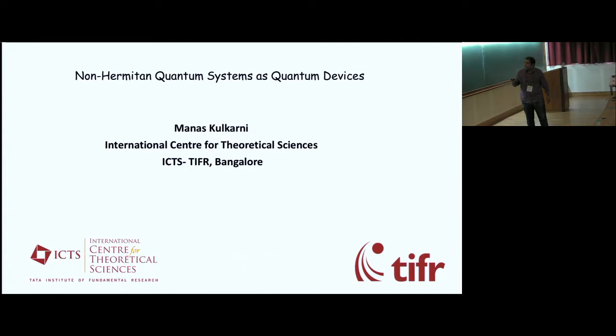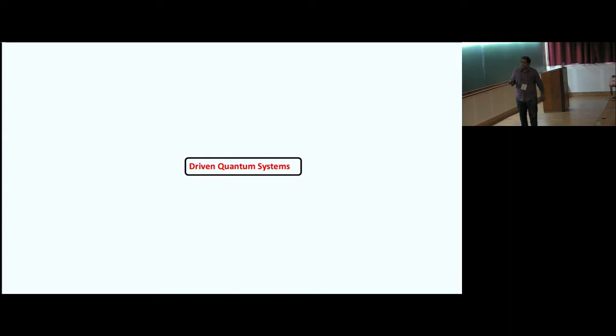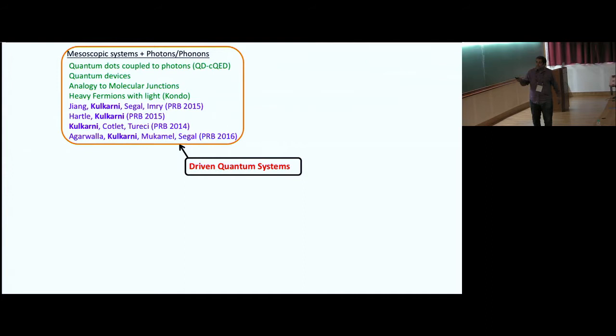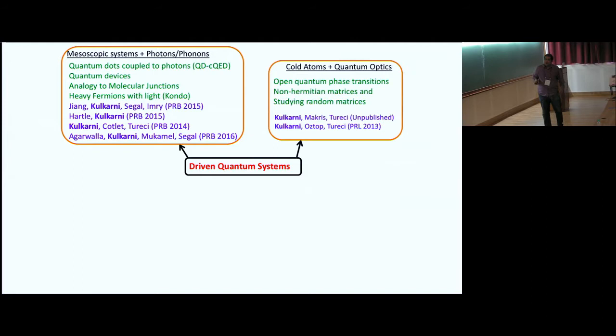Part of my research interest is on driven quantum systems. One example is mesoscopic systems — like quantum dots at finite voltage bias — but if you couple them to additional bosonic degrees of freedom like photons or phonons, you can have interesting phenomena and it can lead to quantum devices. You can study the Kondo effect with light, etc.